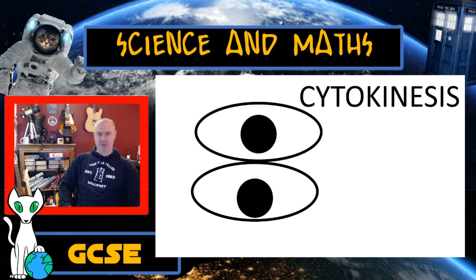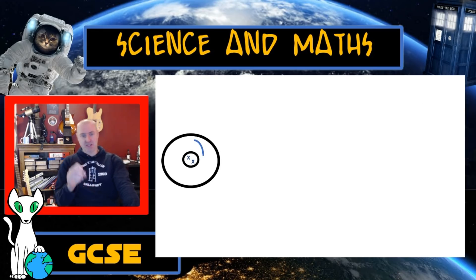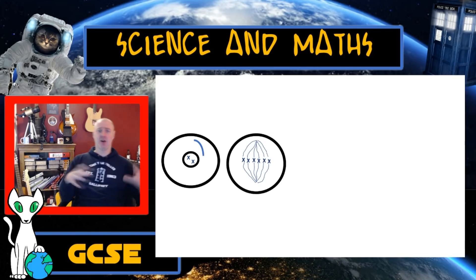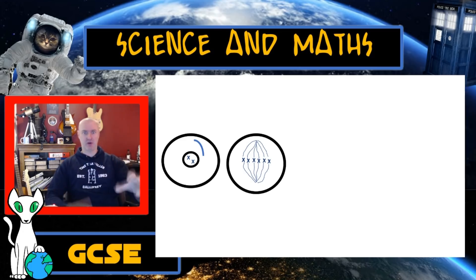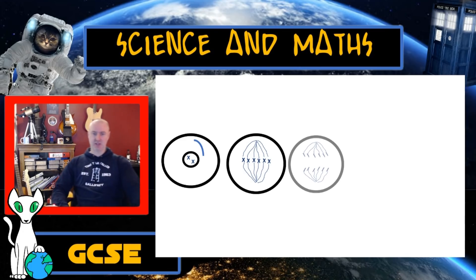So just a bit of a recap. Interphase is where our genetic material is duplicated. Then in prophase, the nuclear membrane breaks down and we start the production of these spindle fibers. In metaphase, our sister chromatids line up across the middle of the cell and the spindle fibers grow out from each side and complete their growth and grab hold of a sister chromatid each.